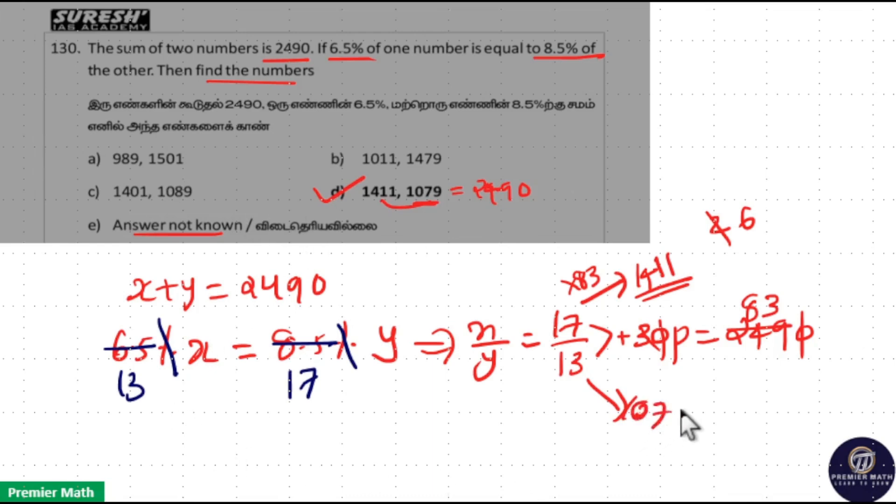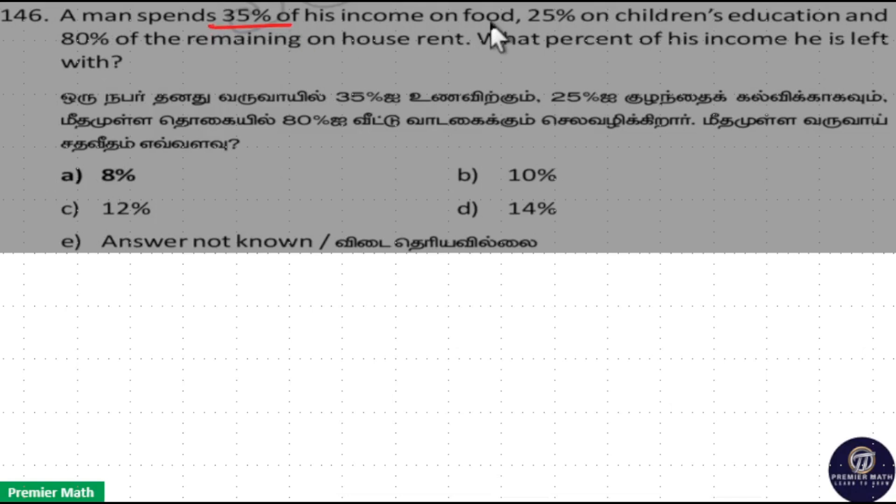A man spent 35% of his income on food, 25% on children's education, and 80% of the remaining on house rent. What percentage of his income is he left with? Consider 100 rupees as income.